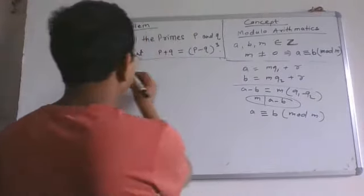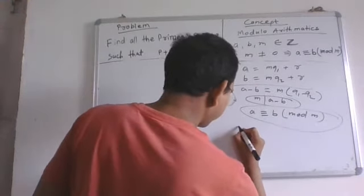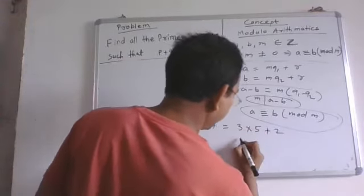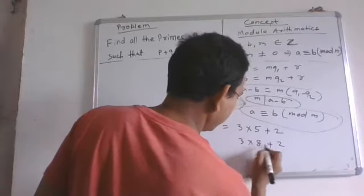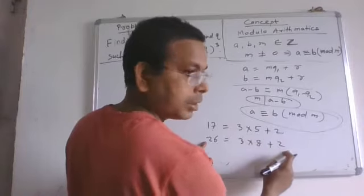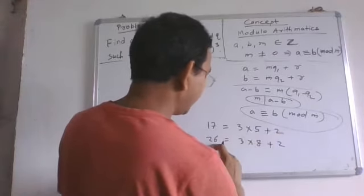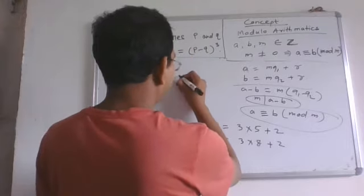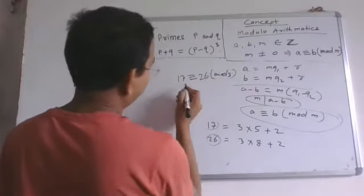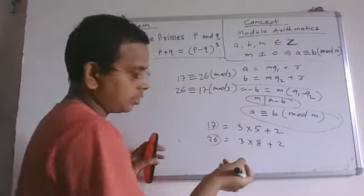For example, 3 times 5 plus 2 equals 17, and 3 times 8 plus 2 equals 26. These two numbers are congruent in modulo 3 because both give remainder 2 when divided by 3. So 17 is congruent to 26 in modulo 3, and we can write it reversely: 26 is congruent to 17 in mod 3.